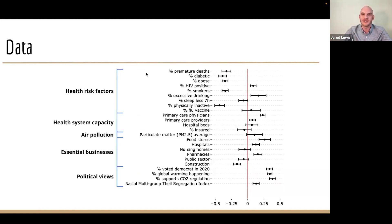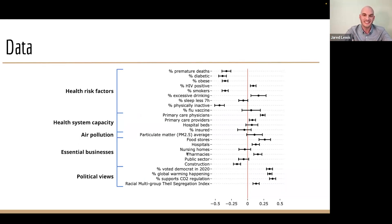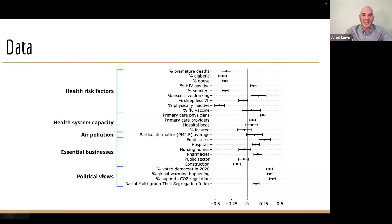Then we have health risk factors such as how many people are diabetic, health system capacity — how many primary care physicians there are, what's the number of hospital beds in the county — air pollution, essential businesses like how many people are working in construction, which can make a big difference for vaccination rates, and political views.